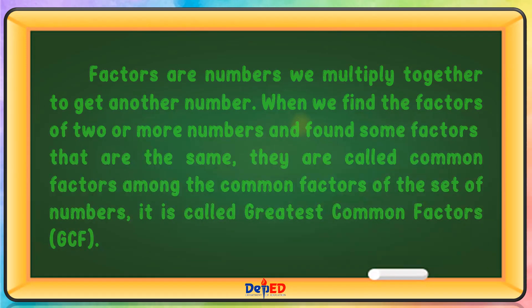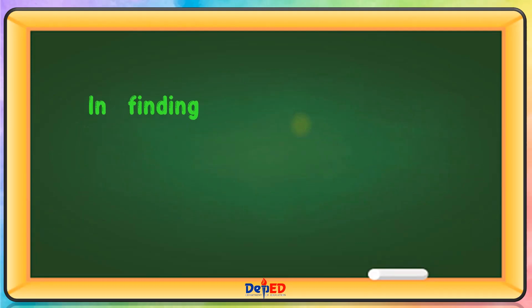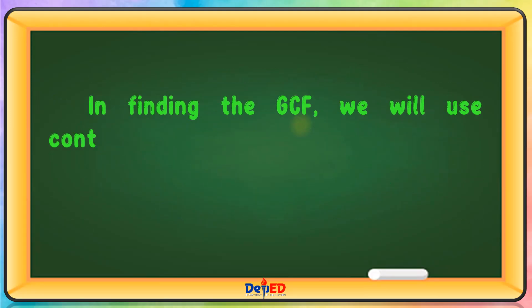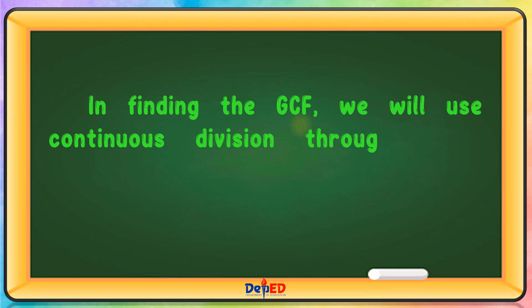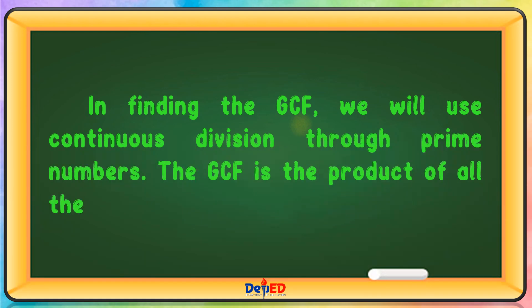In finding the GCF, we will use continuous division through prime numbers. The GCF is the product of all the prime divisors.